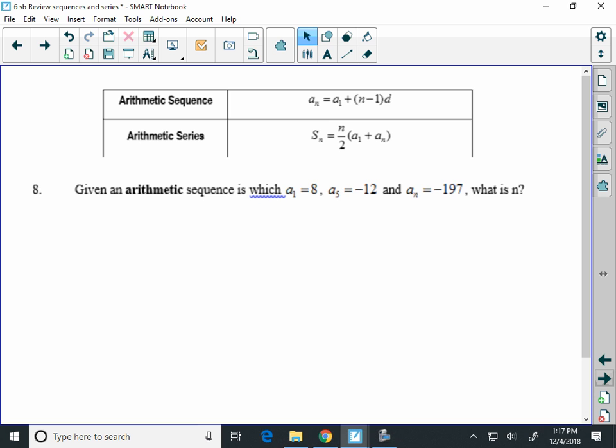Number 8. Given an arithmetic sequence in which a sub 1 is 8, a sub 5 equals negative 12, and a sub n equals negative 197. What is n?